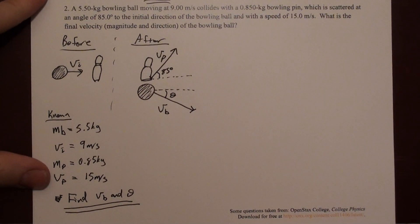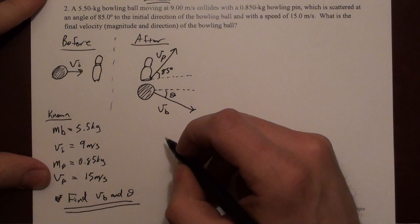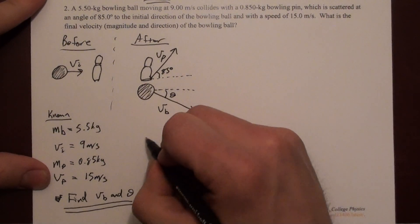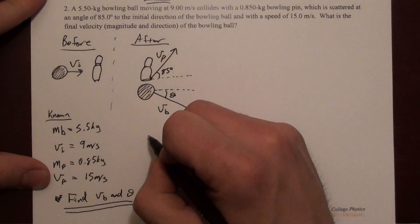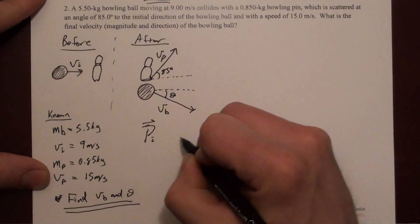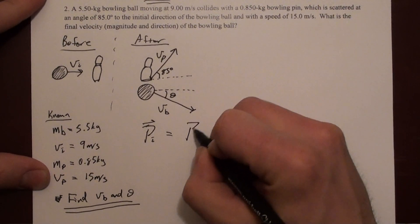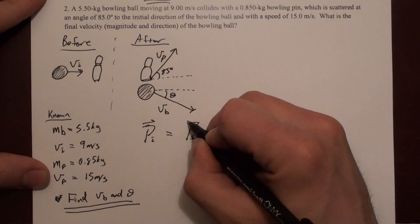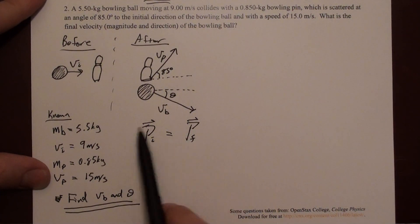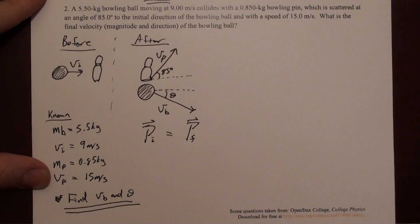We're going to approach this similarly to the previous problem. We're going to rely on conservation of momentum. Conservation of momentum states that the total initial momentum is unchanged, so the total momentum before equals the total momentum after. This is a vector equation, so we're going to write this in x and y directions.